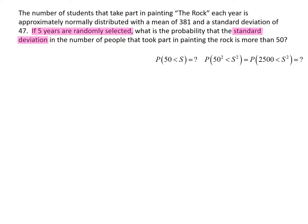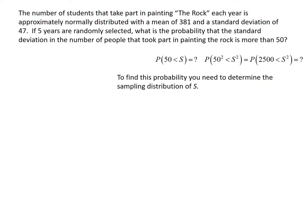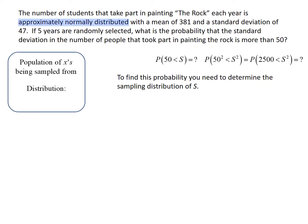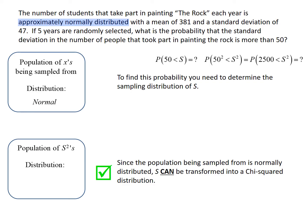We need to know the distribution of s or s-squared, so we look at the population being sampled from. We were told that the number of students that paint the rock each year are approximately normally distributed. Because the population being sampled from is normally distributed, our standard deviation can be turned into a chi-squared score. The probability that the standard deviation is greater than 50 can be turned into a question about the probability that a chi-squared score does something. The distribution of s is directly related to a chi-squared distribution — we could use the chi-squared CDF on TI calculators to find that probability. All we care about right now is the distribution; soon we'll come back and find the actual probability.